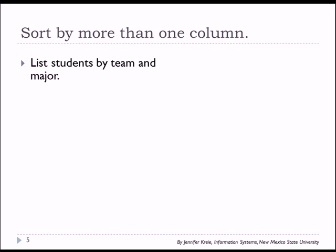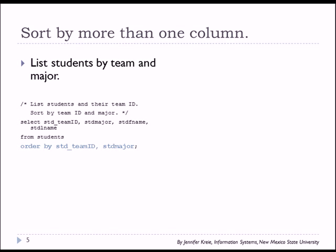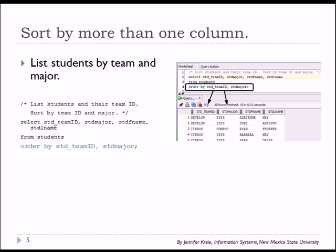Now let's sort by more than one column. Let's list the students by team and major and sort by team and then major. We have our columns to display in the SELECT clause, students in the FROM clause, and ORDER BY with two columns. Now we see that we're getting a sort by team ID, and then by student major within a particular team.